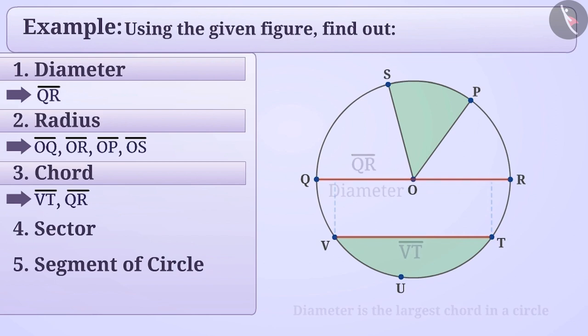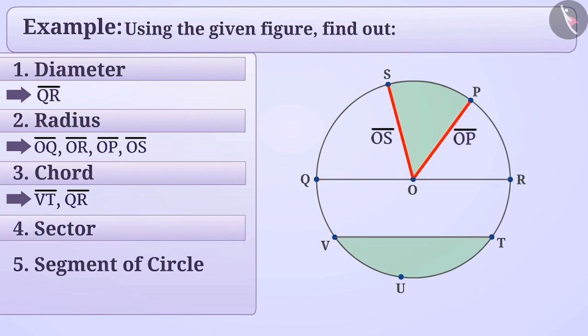Part of a circle formed by any 2 radii and corresponding arc is called a sector. The area formed by radii OS, OP and arc SP in the given circle is a sector.